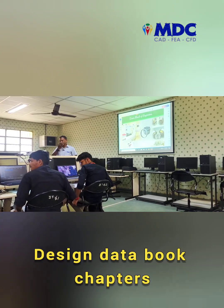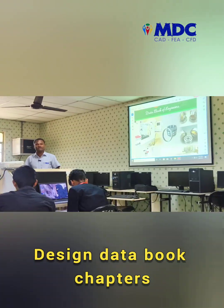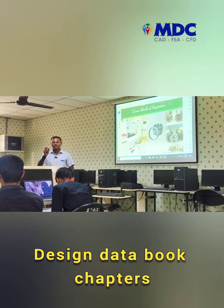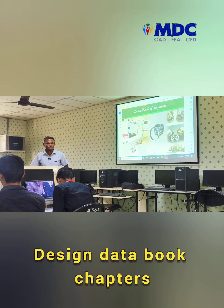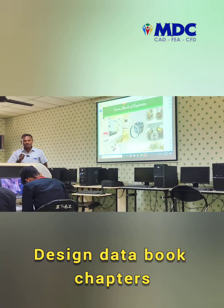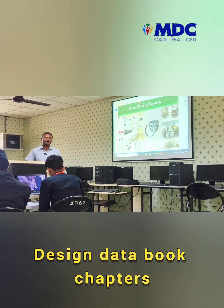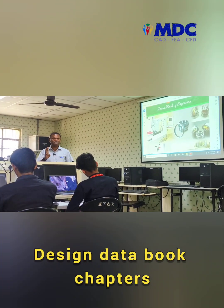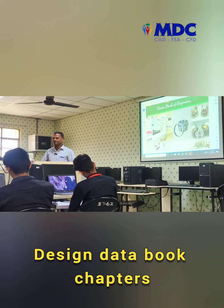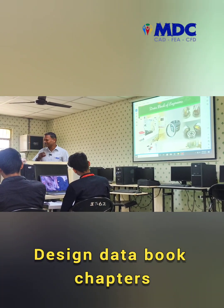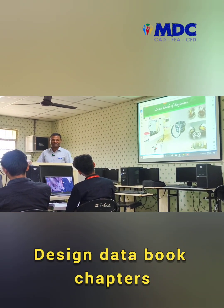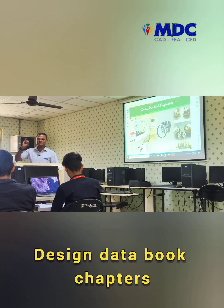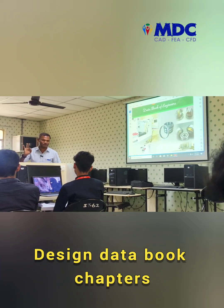The first chapter is the selection of materials. If you have any product, the material selection is very important. If you have selected a material, there are three properties that are must: the physical properties, chemical properties, and mechanical properties.